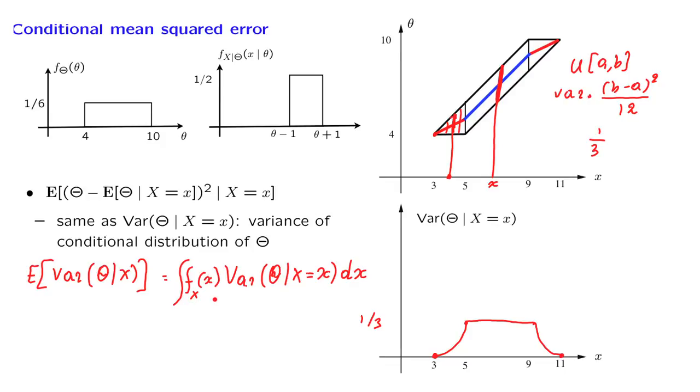What is the PDF of x? It is not given to us, but can be easily determined from what we have already done. We know the joint distribution of theta and x, and whenever we know the joint, we can find the marginal. Once we find the marginal PDF of x, we can plug it in and multiply by this function we have already obtained, carry out the integration.